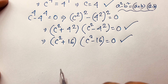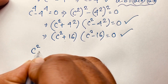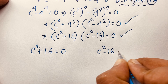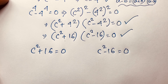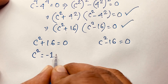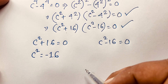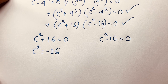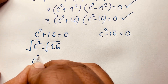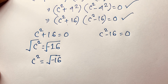Each case is set equal to zero. So we have c squared plus 16 equals 0, and c squared minus 16 equals 0. From the first case, c squared equals negative 16. From the second case, c squared equals positive 16. Taking the square root of both sides of c squared equals 16 gives us c equals plus or minus 4.